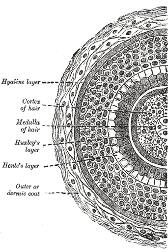Healthy hair indicates health and youth, important in evolutionary biology. Hair color and texture can be a sign of ethnic ancestry. Facial hair is a sign of puberty in men. White hair is a sign of age or genetics, which may be concealed with hair dye, although many prefer to embrace it especially if it is a peliasis characteristic since childhood. Male pattern baldness is a sign of age, which may be concealed with a toupee, hats, or religious and cultural adornments.